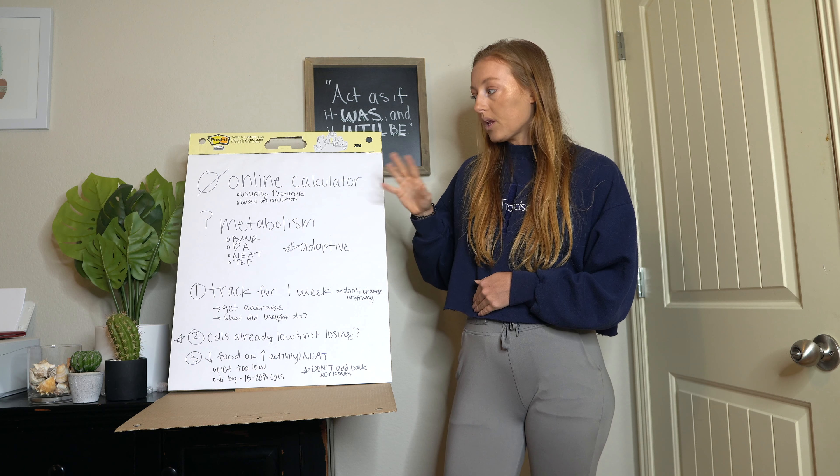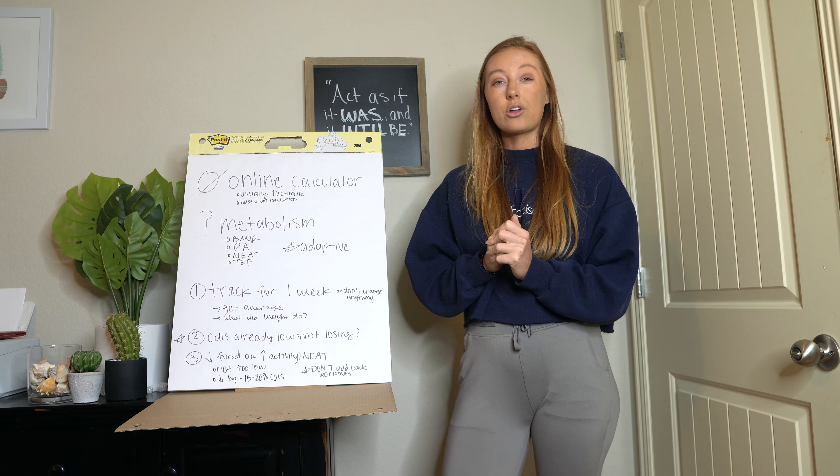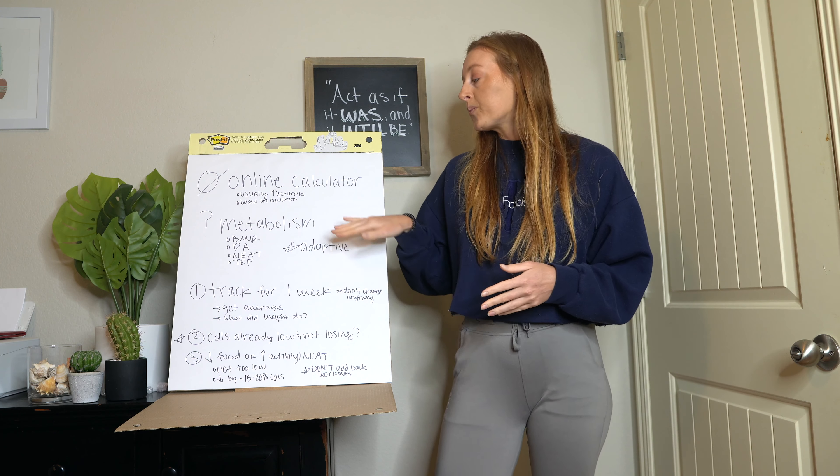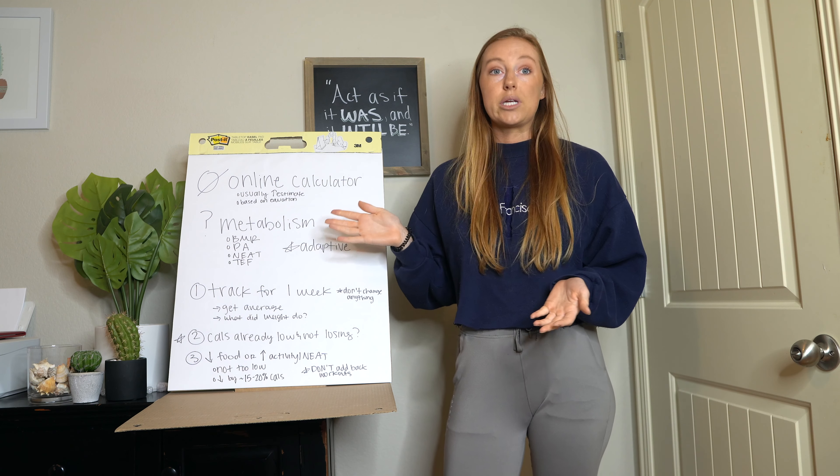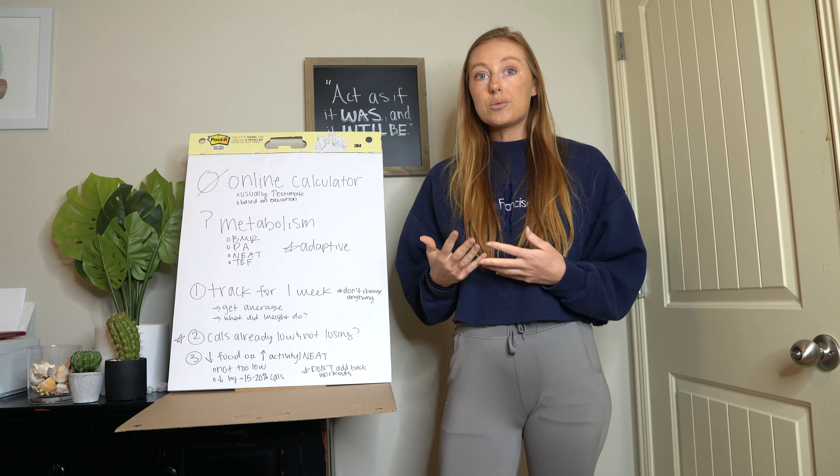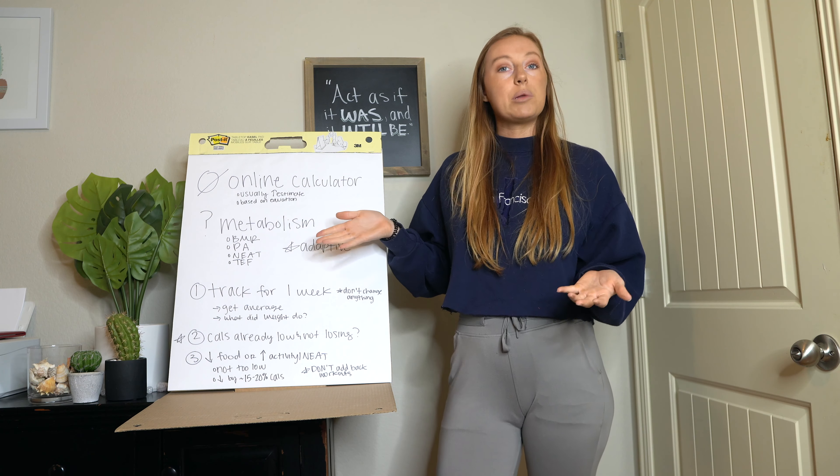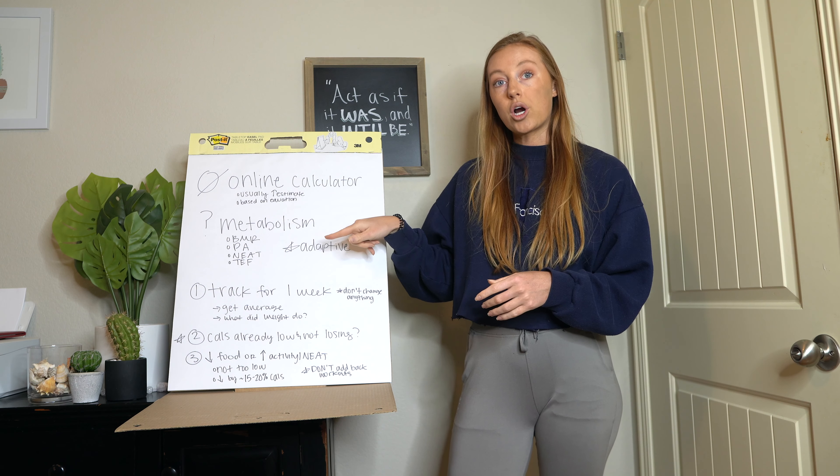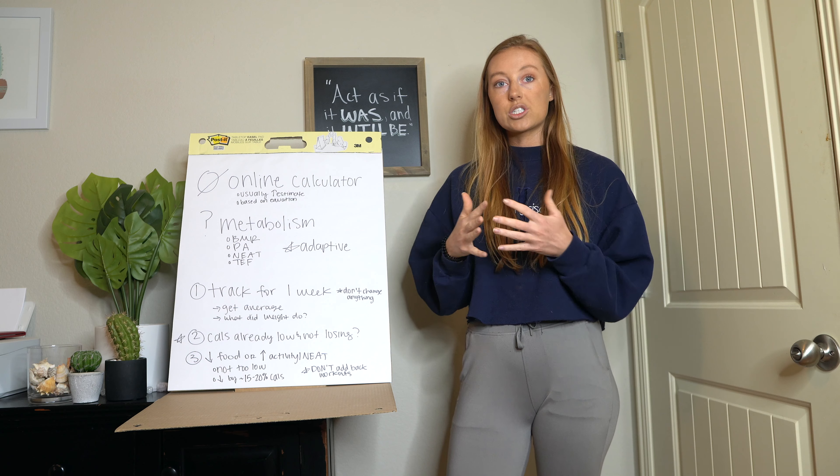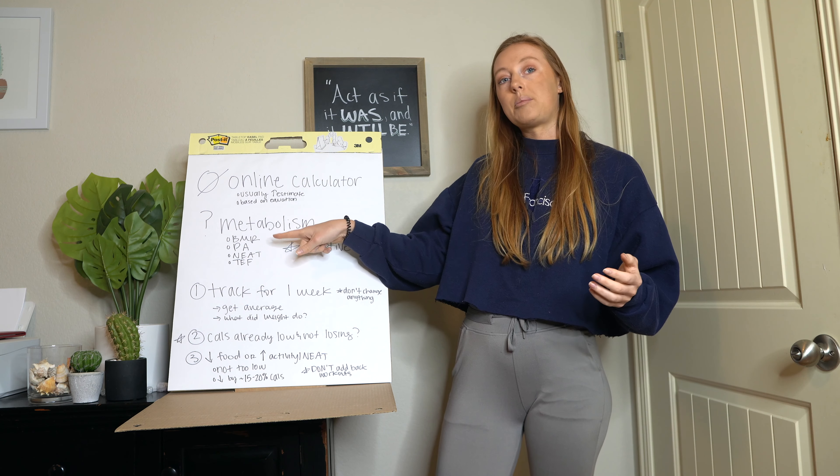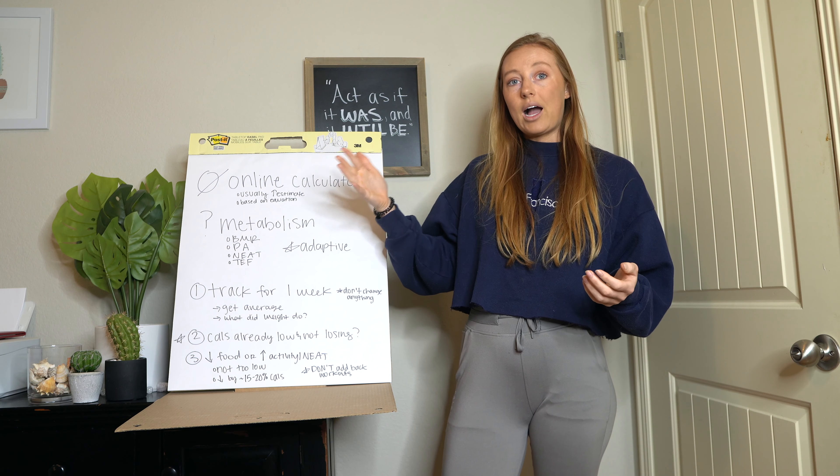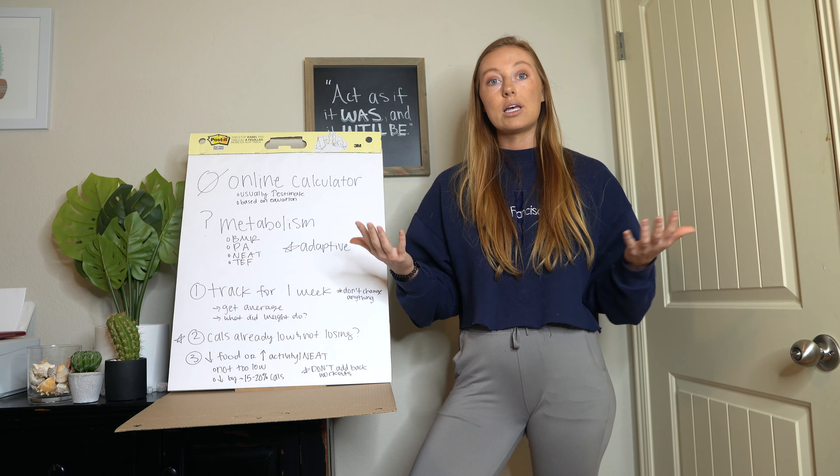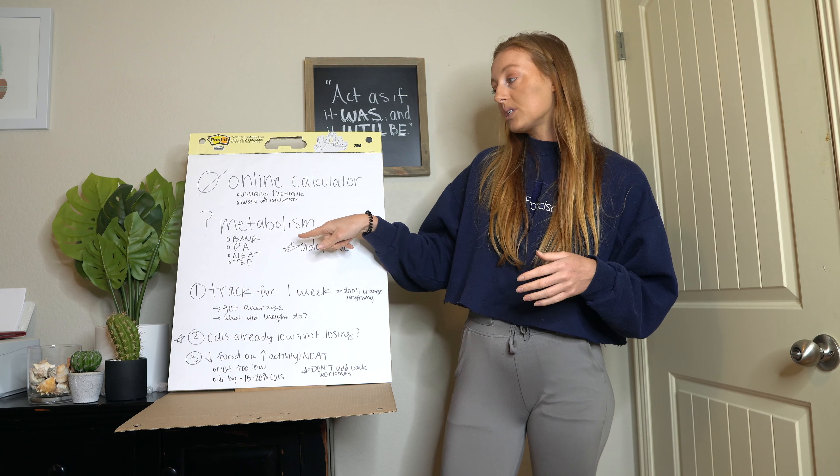When it comes to our metabolism, we have to know how many calories am I burning on average in a day? And there's four components to our metabolism. First one is going to be BMR, your basal metabolic rate, what you need to just be. And this is going to be determined a lot by body composition. The more muscle that you have, the more calories that you're going to burn just to live. Second one is going to be physical activity.